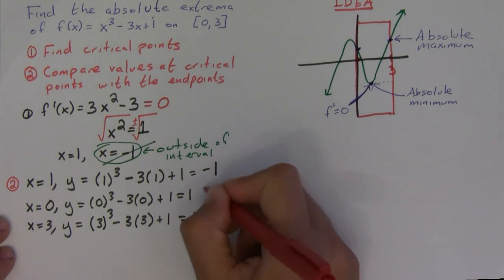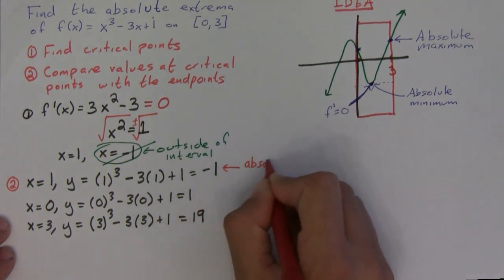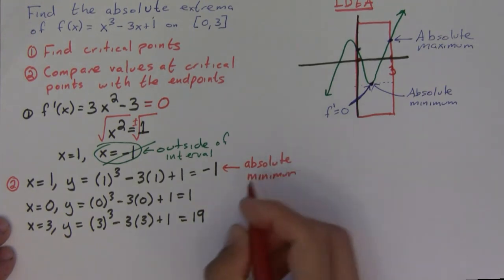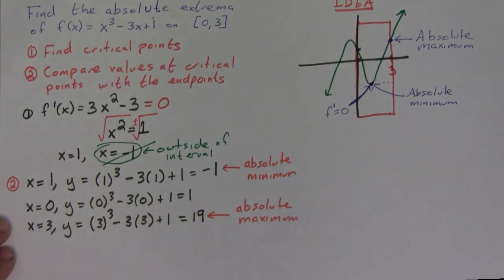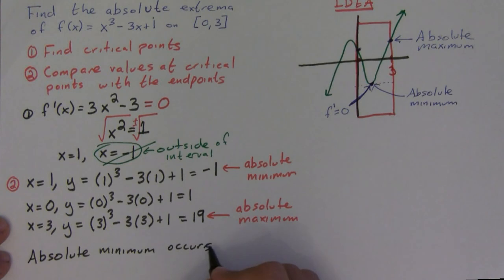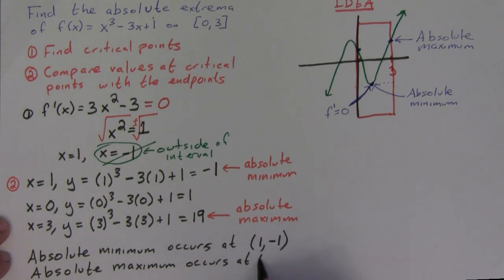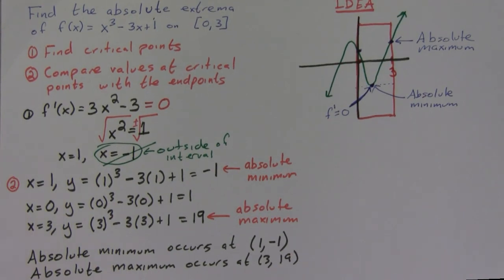Okay, and so you look at these and you look for the smallest one out of all three of these. Well, that's this one - this would be your absolute minimum, and this would be our absolute maximum. And so we say that the absolute minimum occurs at the point (1, -1), and the absolute maximum occurs at (3, 19). And that's it.